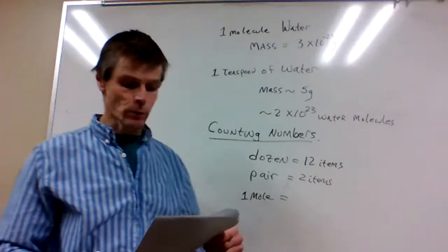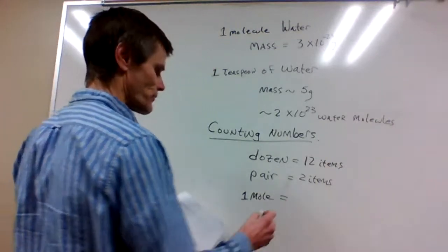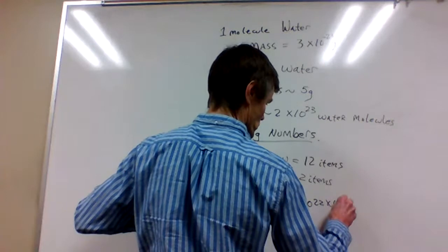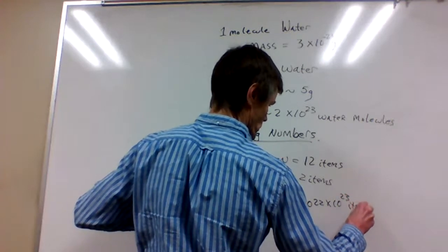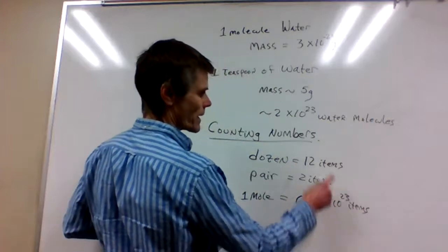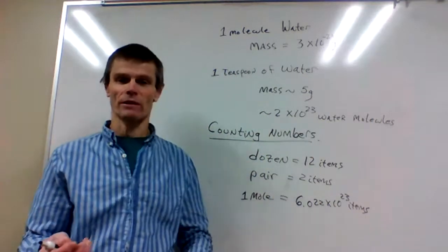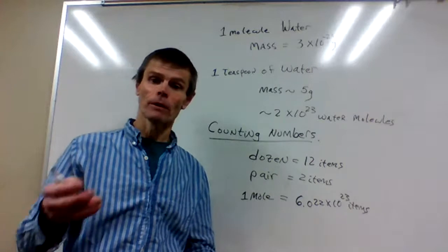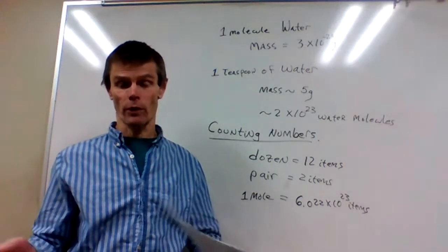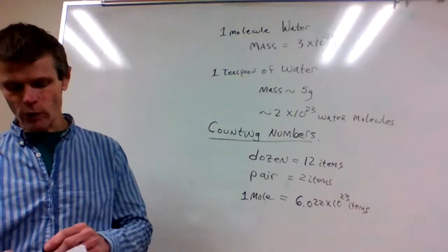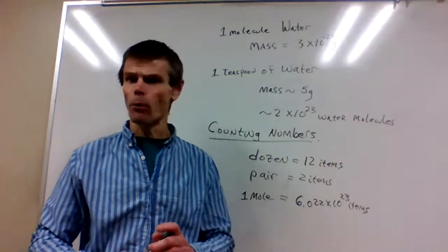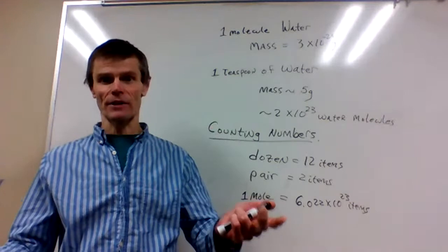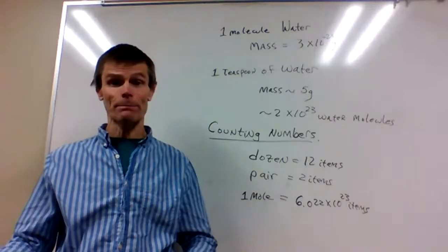One mole is equal to 6.022 times 10 to the 23rd items. Notice it's roughly around the same number of particles of water that we can measure in a teaspoon. So this is a unit of measurement in the international system used to represent the number of particles we're considering. In science, we're usually going to look at a mole of atoms or molecules, but we can have a mole of anything.